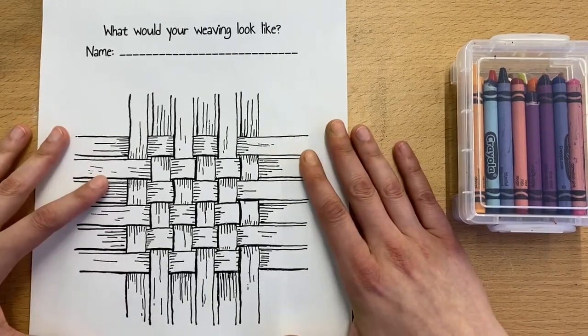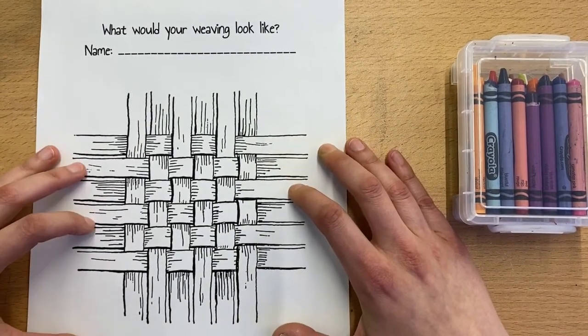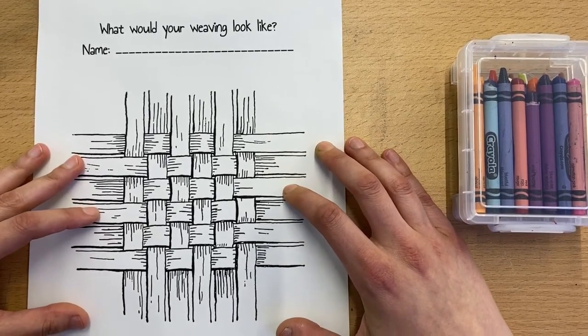We'll be able to actually start weaving together next time, but what I want you to think about right now, if you were to make a weaving, what colors would you want it to include?